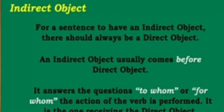Now let us see indirect object. What is an indirect object? For a sentence to have an indirect object, there should always be a direct object. Remember, students, there can be no indirect object without a direct object. An indirect object usually comes before the direct object, and it answers the question to whom or for whom the action of the verb is performed. It is the one that receives the direct object.